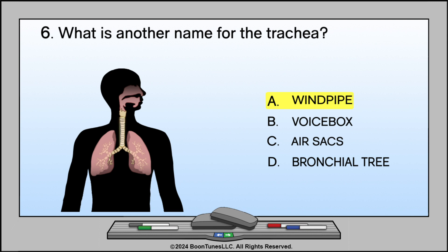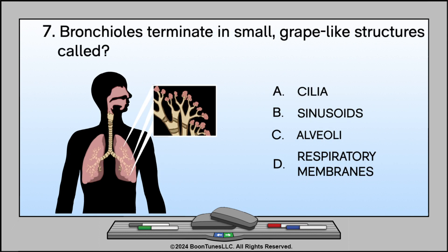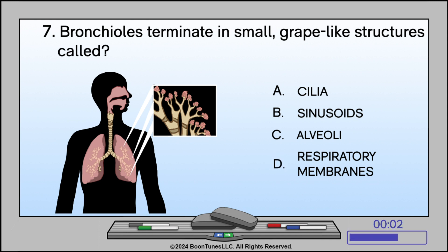Bronchioles terminate in small grape-like structures called: A. Cilia. B. Sinusoids. C. Alveoli. D. Respiratory membranes. The answer is C. Alveoli.